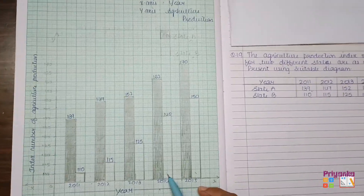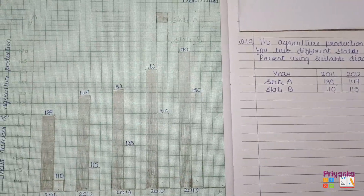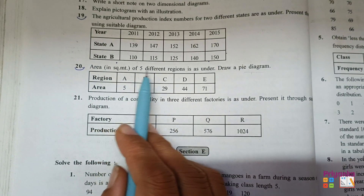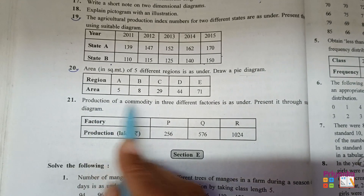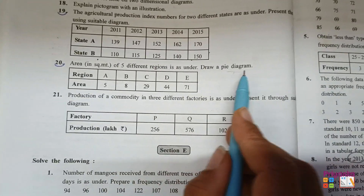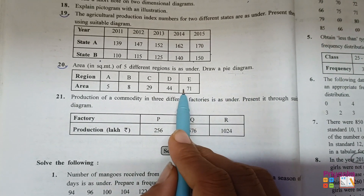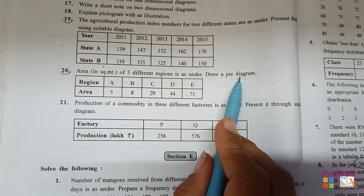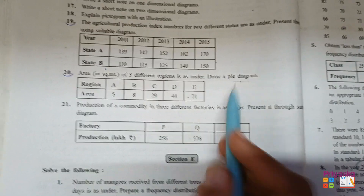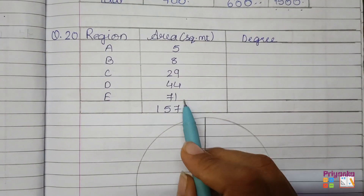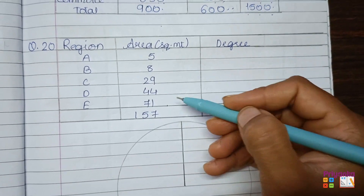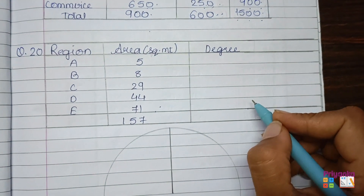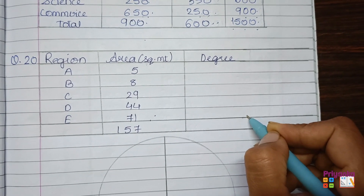Moving to question number 20: the area in square feet of five different regions is given. We need to draw a pie diagram. First, make a table with all the information. Take the total of the area, then calculate each region's degree out of 360 degrees for the pie diagram.